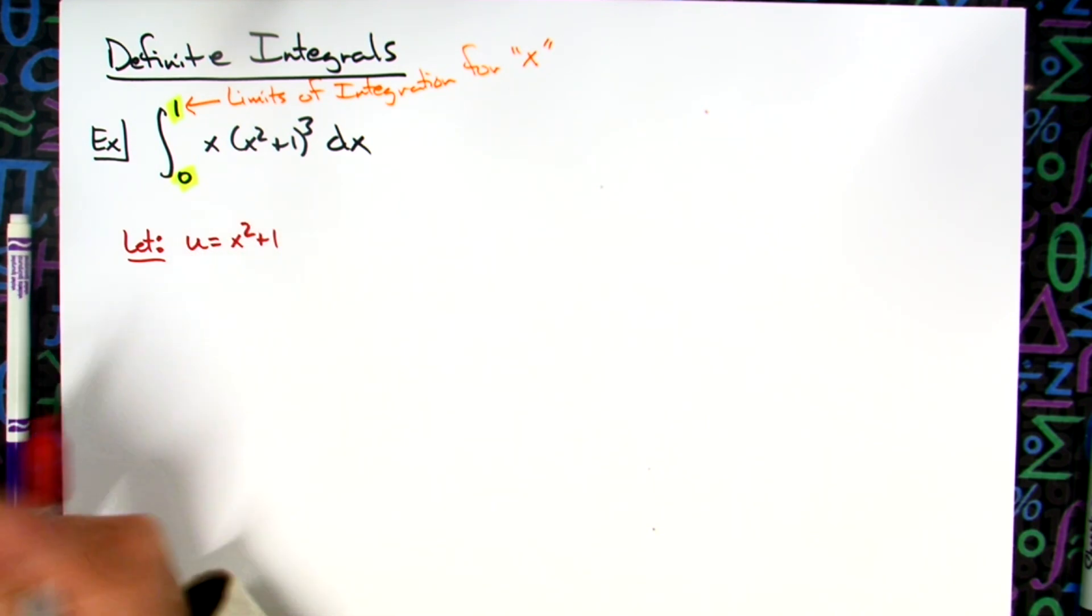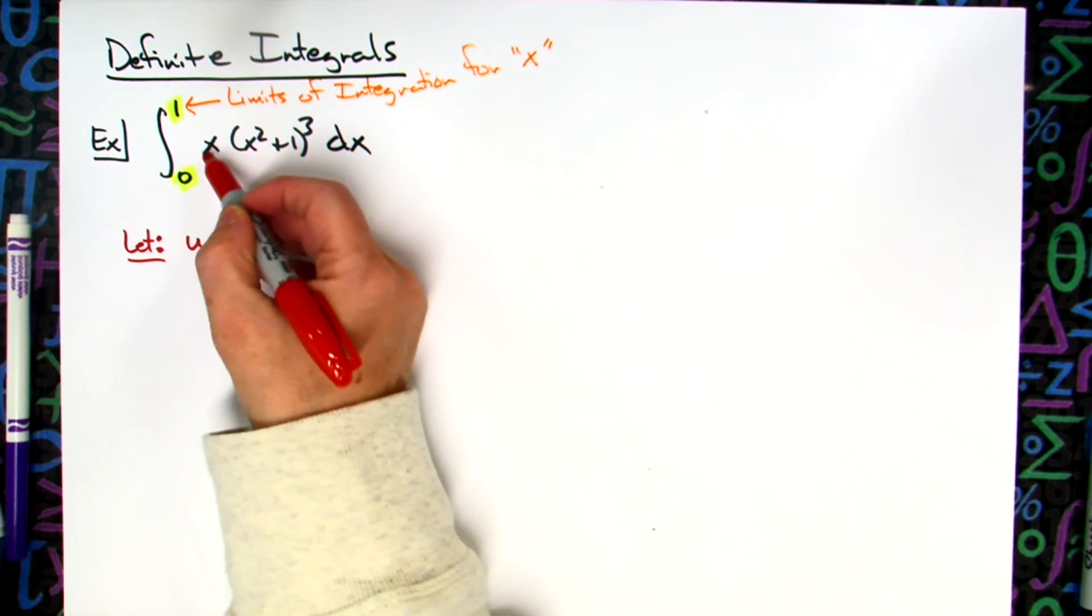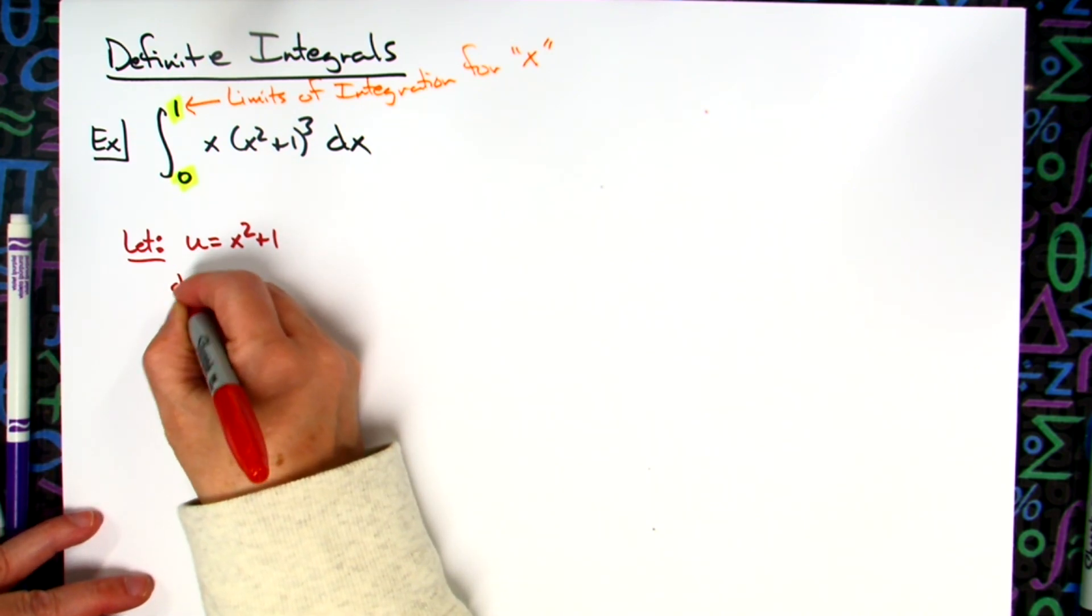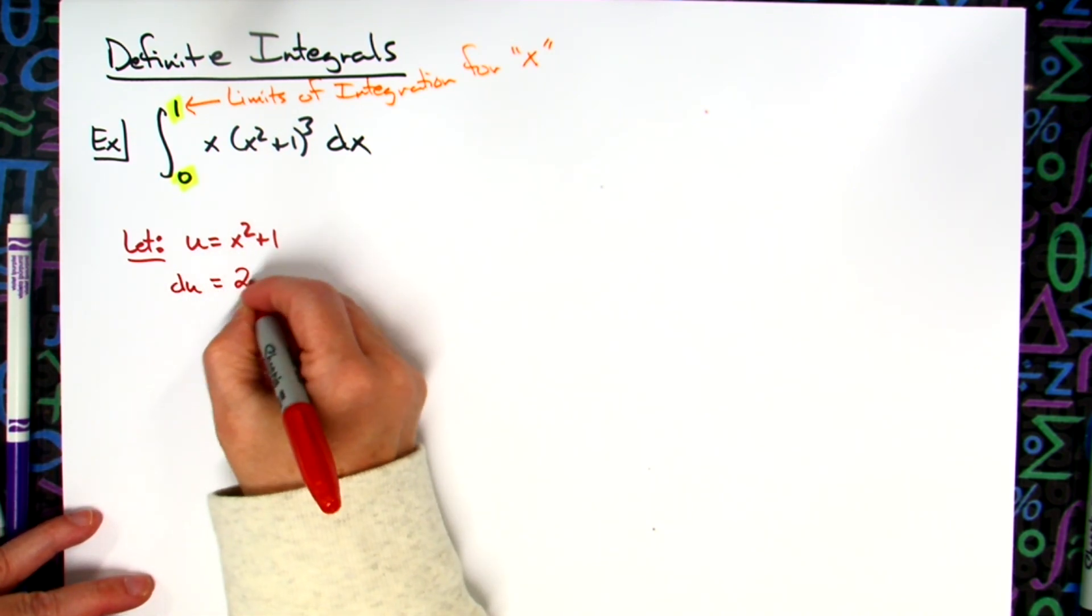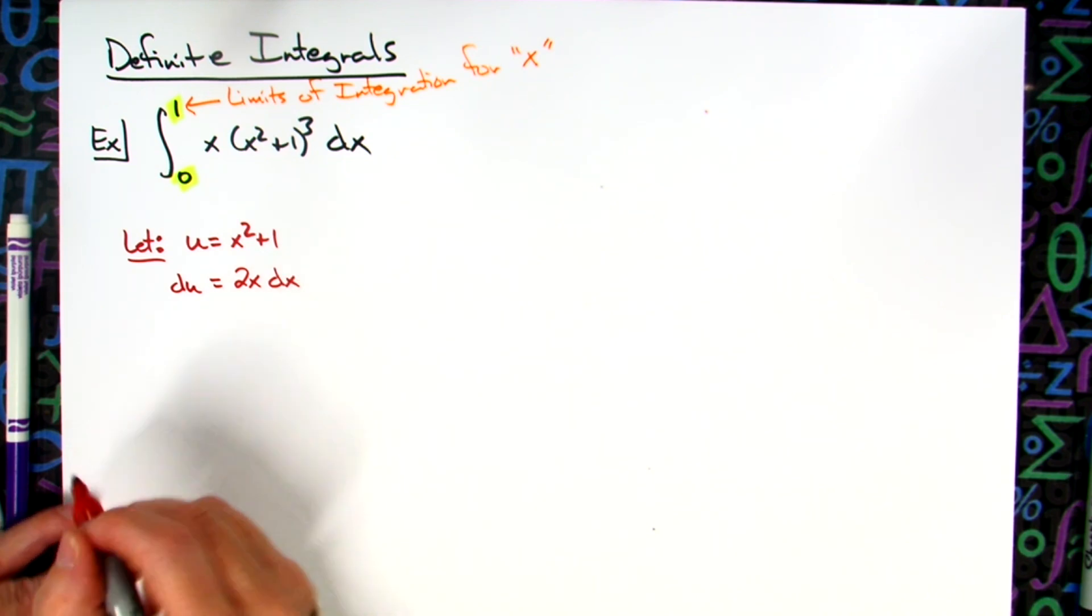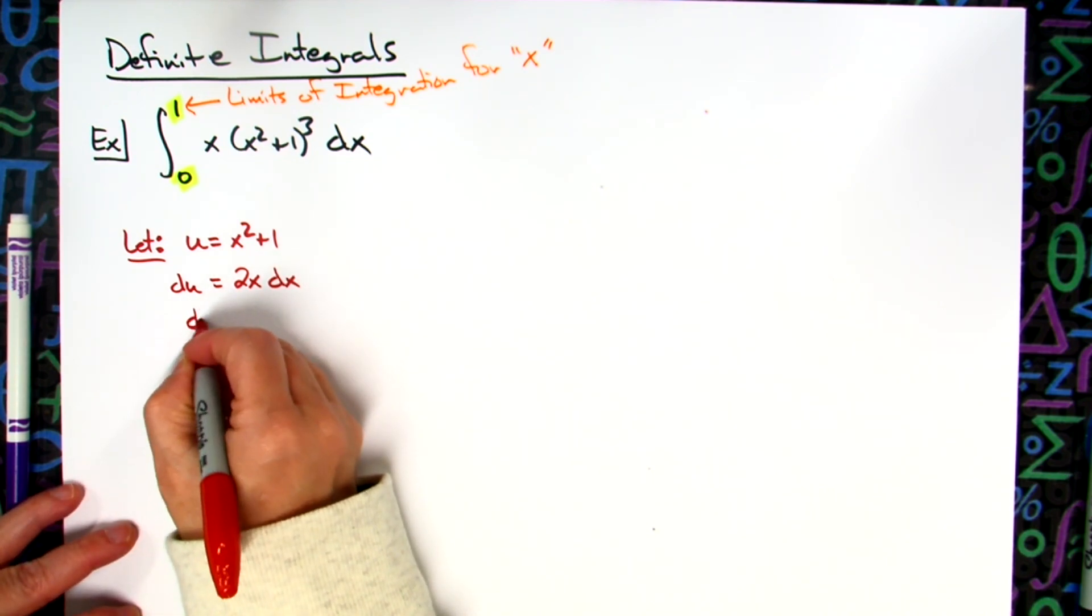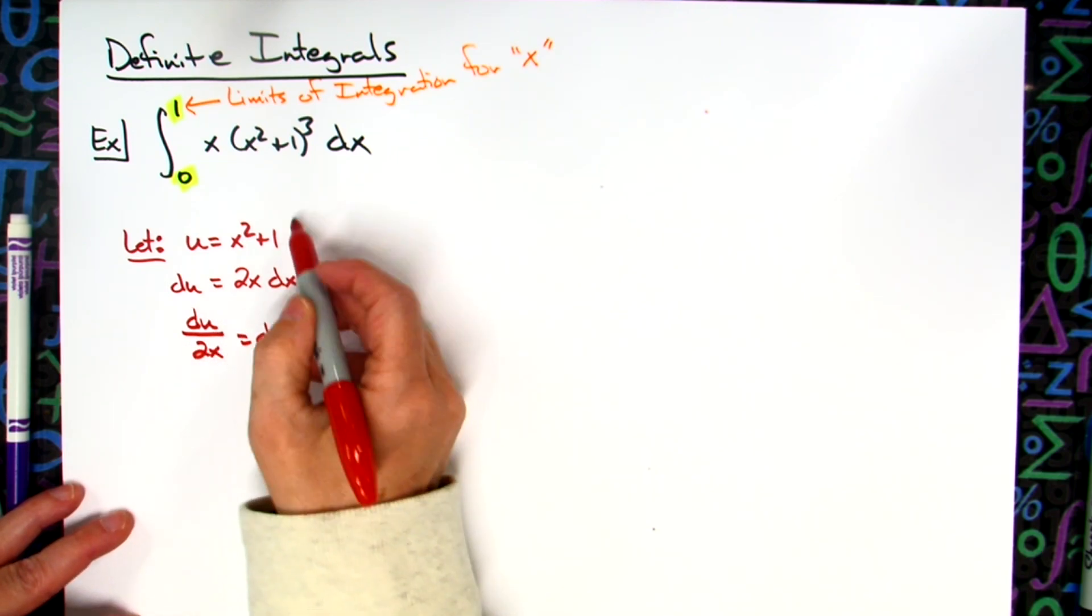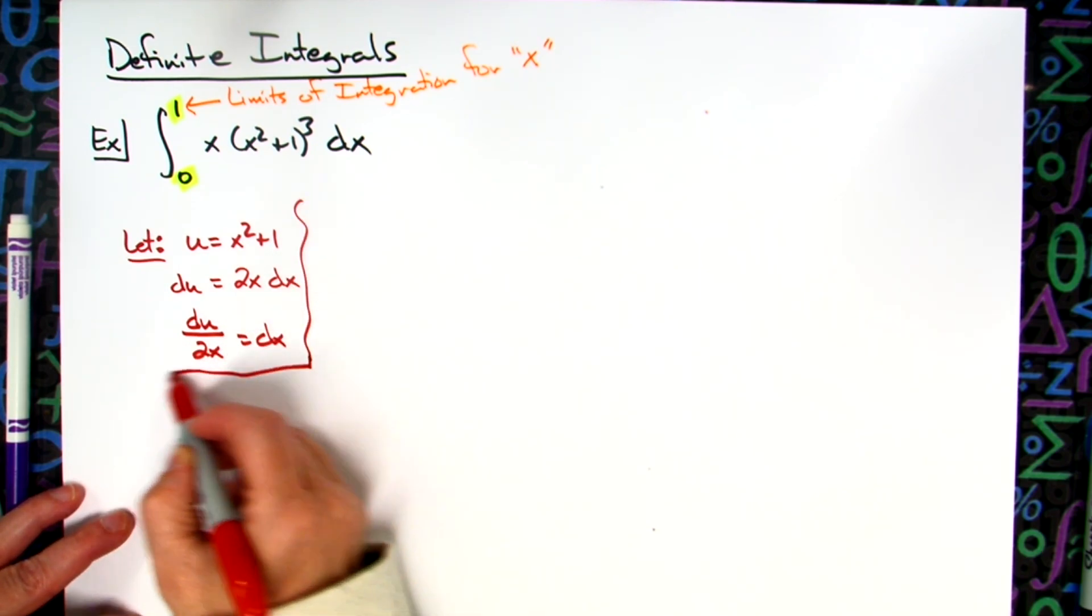When you take the derivative of x squared, you get 2x, which means that x is going to go away. So it's a good thing. We're on the right track. We're going to go du is equal to 2x dx. We'll solve all the way down for dx. So we'll have du over 2x.